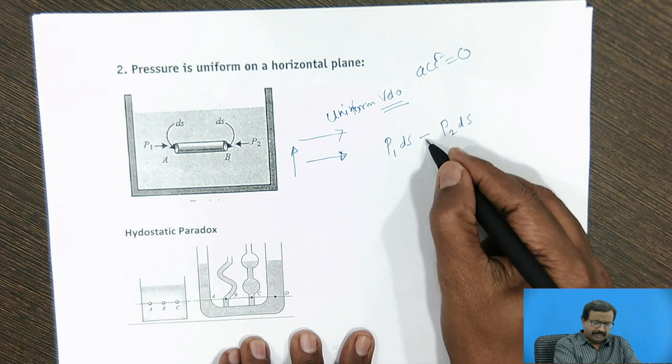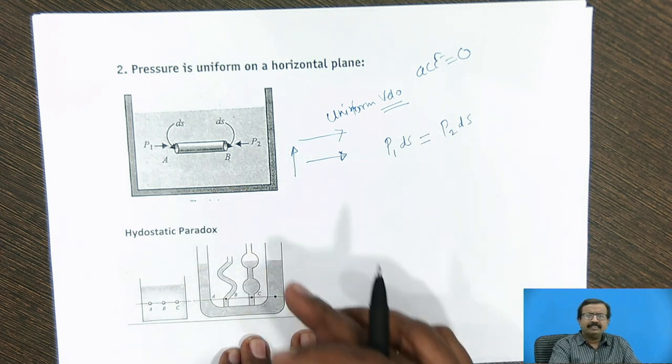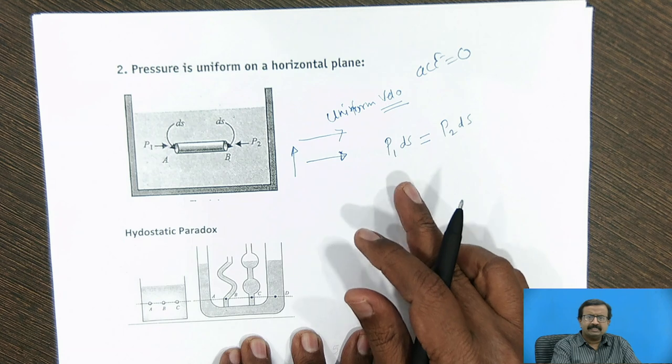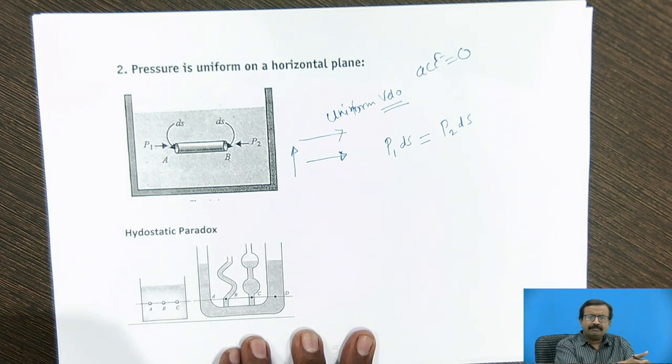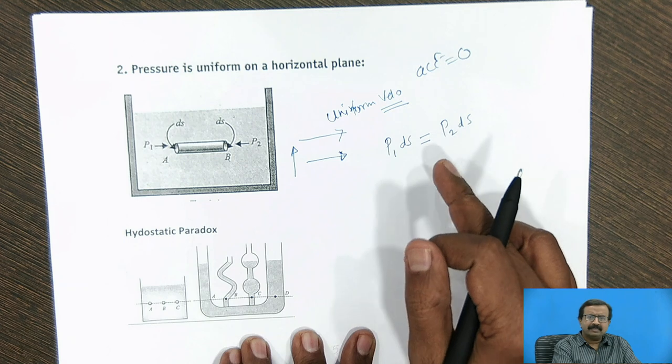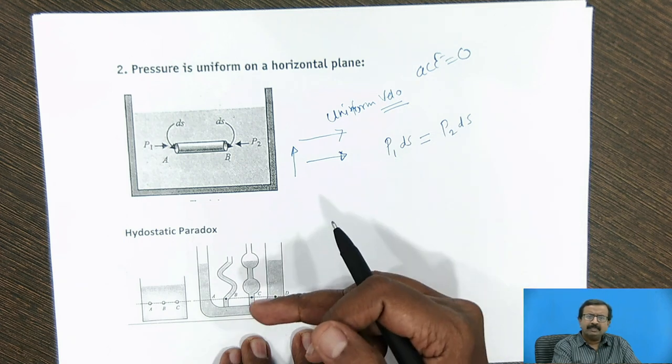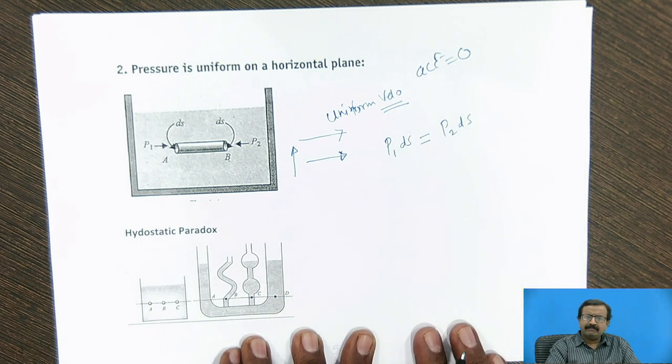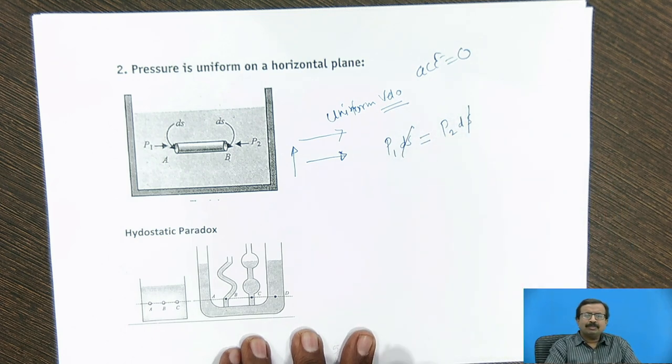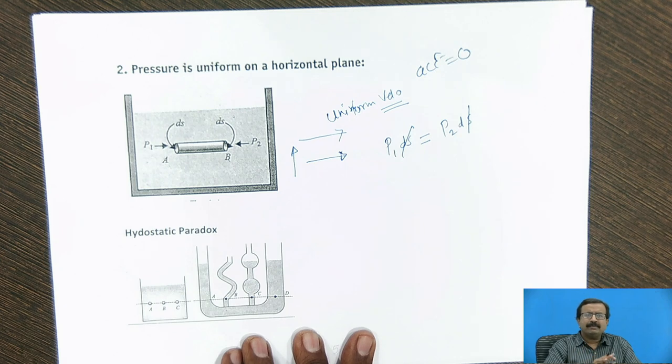Now what happens? If both are equal, then only the particle is in equilibrium. Otherwise not. If P1 Ds is greater than P2 Ds, particle will move to the right. If P2 Ds is greater than P1 Ds, particle will move to the left. But if particle is in a static equilibrium, what I get? P1 is equal to P2. So because of this, horizontal layer has got same static pressure. I am not talking about the dynamic pressure. It is a static pressure.